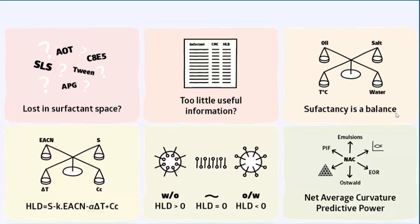Now, if surfactancy is a balance, why don't we use HLB — hydrophilic-lipophilic balance? The reason is that HLB is a value for the surfactant, whereas balance is a function of the system. So HLB must be plain wrong because it's trying to apply a system value to the surfactant.